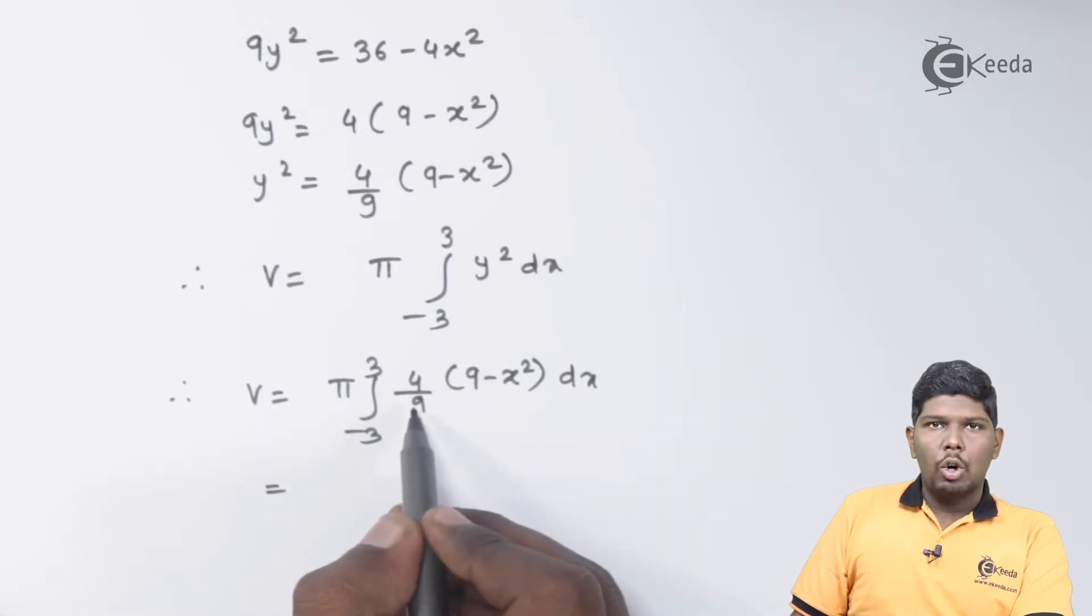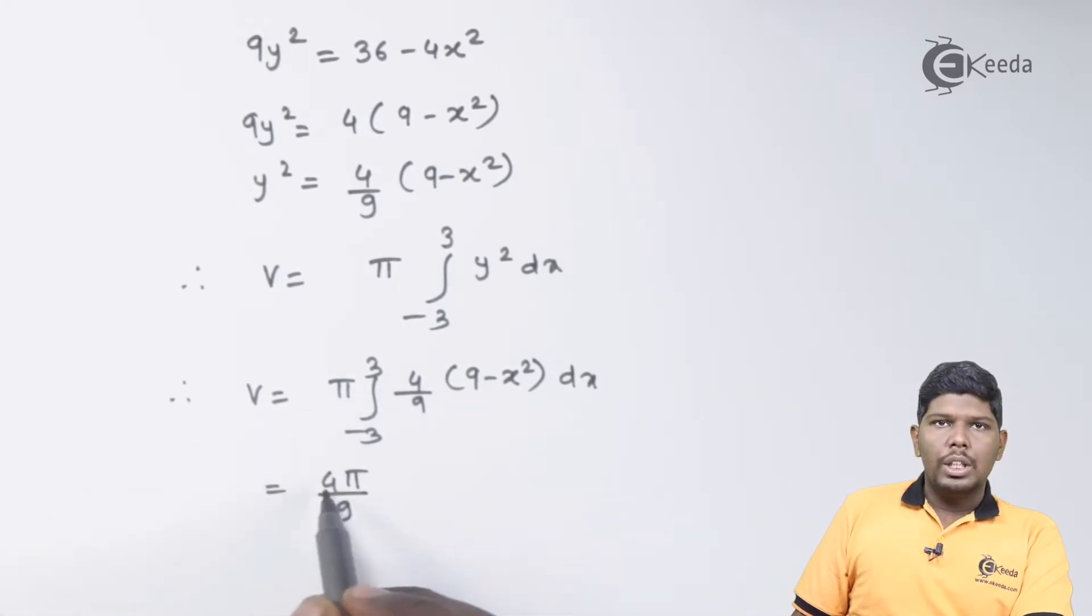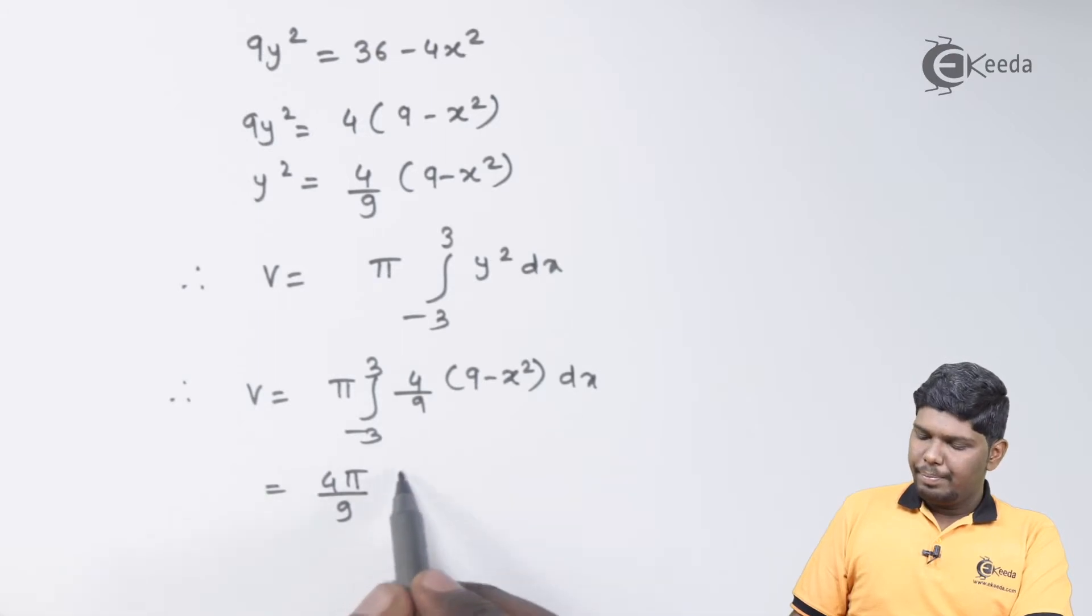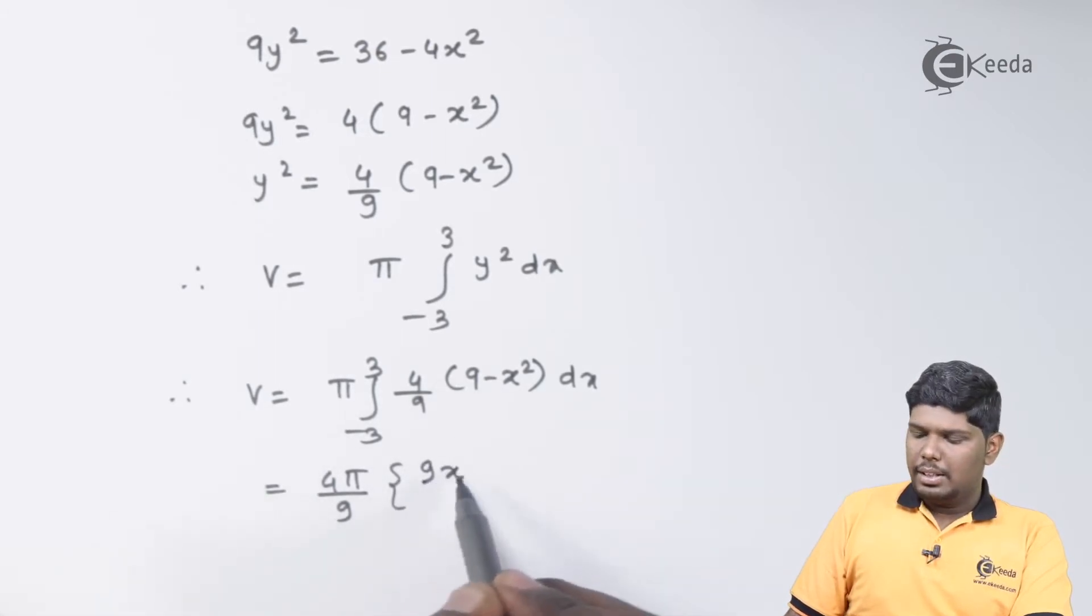Now 4/9 is a constant. So this will give you 4π/9, integration of 9 will be 9x, integration of x² will be x³/3, within limits minus 3 to 3.